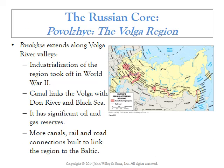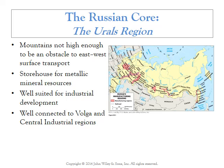Another important area in the Russian core is the Volga region, or Povolzhye. The main city there is Volgograd, which at one time was called Stalingrad during Stalin's regime. Moving further east, we get into the Urals — a north-south mountain chain that extends far to the north, but as far as importance to industrial development, it's really the southern part that matters. The Urals are not so tall as to prevent east-west travel, which is good. This area is very important because of the resources inherent in mountainous terrain, making it very significant for Russian industry.